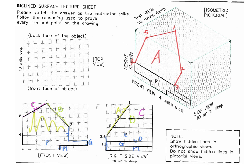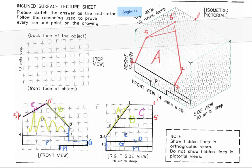Connect all of the numbers in sequence order to see the foreshortened surface A in the isometric view. After that, we can locate surface C, which involves number 1, 5, 1', and 5'. Using number 1 and number 5 to find where number 1' and 5' are in the depth direction. Connect 1, 1', 5, and 5' to see the foreshortened surface C in the isometric view.